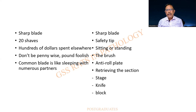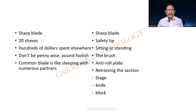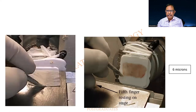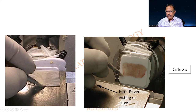You all know what will happen if a foreign body enters another block. A sharp blade — the safety tip to be followed. Whether you are sitting or standing, there has to be pressure. I will also be touching upon retrieving a section and a comment on the knife and the block. Look at this — a superb section being cut, drawn by hand and pinned onto a wooden plank so that a straight section is obtained. This is the modality of cutting.